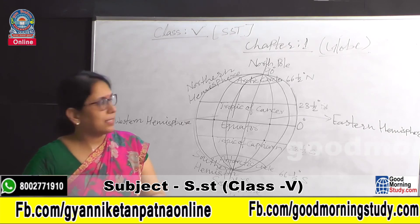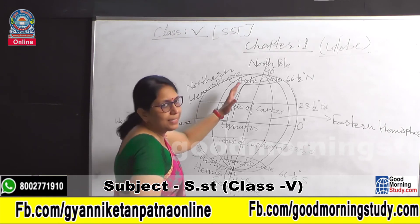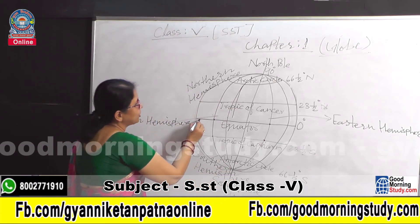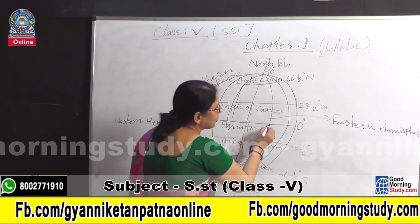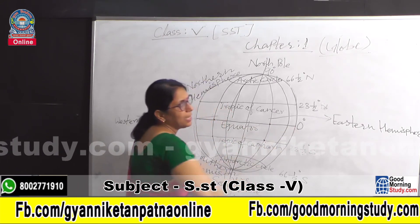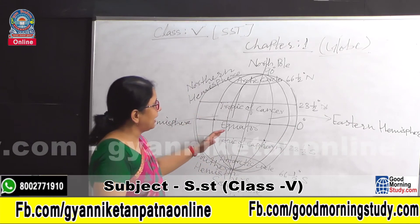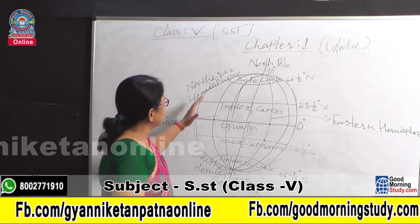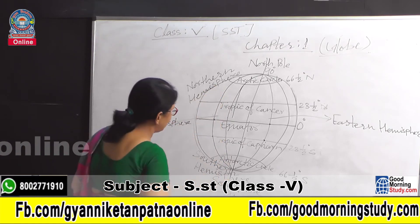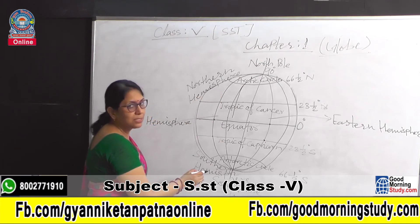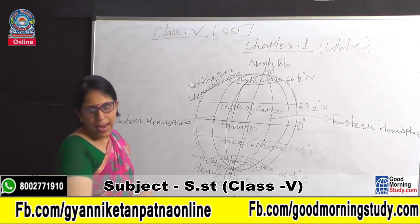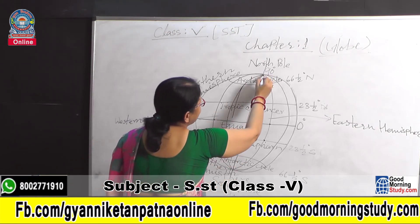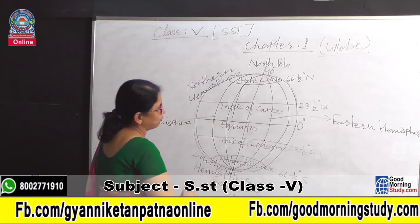To recap: the globe always spins on its axis. The equator is an imaginary line indicating zero degrees, which divides the Earth into two equal parts. The upper part is the Northern Hemisphere and the bottom part is the Southern Hemisphere. The globe is also divided into two poles — the upper is the North Pole and the lower is the South Pole.